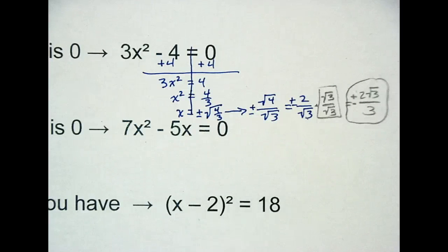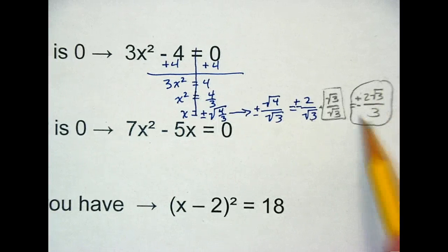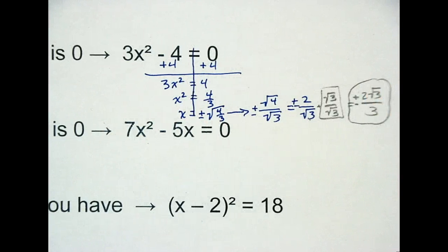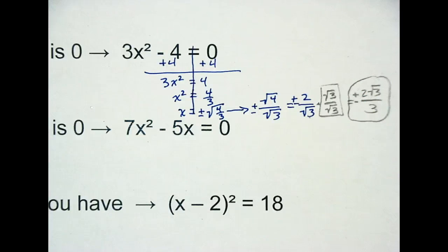Any questions on that process there? Dylan asks, so for the plus minus, would it go with the whole thing, or does it just go with the square root? It's the whole thing, this whole number is a positive, so you have the positive 2 root 3 over 3, and you have negative 2 root 3 over 3. Those are your two solutions.